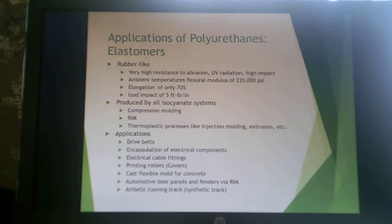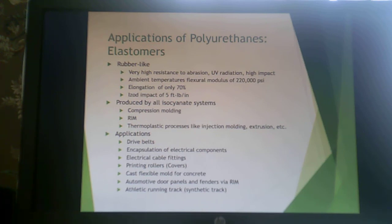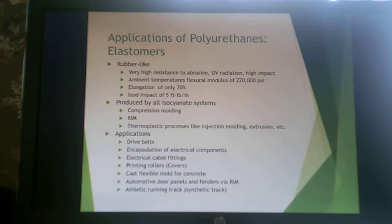Polyurethane elastomers are rubber-like with very high resistance to abrasion, UV radiation, and high impact. They have a very high flexural modulus, with elongation around 70% and fairly good impact properties. They can be produced by compression molding, reaction injection molding, or thermoplastic processes. Uses include drive belts, encapsulation of electrical components, cable fittings, printing roller covers, flexible molds for concrete, outdoor panels and fenders by reaction injection molding, and athletic running tracks — that nice springy track is a polyurethane elastomer.